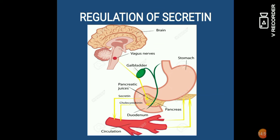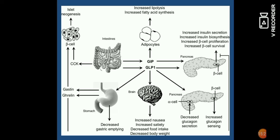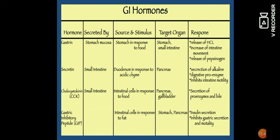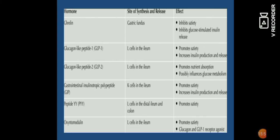Regulation of secretin: pancreas को उद्दीप्त करता है secretin। इसके स्त्रवण में basic salts अधिक होते हैं और enzyme कम होते हैं। इस chart में अपन देख सकते हैं — gastrin, GIP pancreas को stimulate कर रहा है beta cells से insulin release करने के लिए। GI hormones में gastrin hormone, secretin hormone, cholecystokinin hormone, gastric inhibitory hormone, ghrelin hormone, GLP (glucagon-like protein), GIP peptide शामिल हैं।